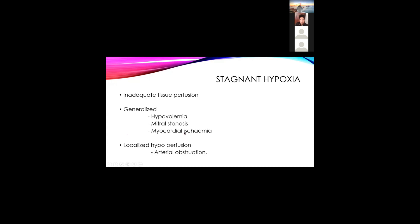The third type is stagnant hypoxia — there is inadequate tissue perfusion, that is shock. There can be a generalized problem such as hypovolemia, trauma, shock, or cardiogenic shock from myocardial infarction reducing cardiac output. There can also be a localized problem — arterial obstruction due to thromboembolic phenomena, tension pneumothorax compressing pulmonary vessels, or cardiac tamponade causing obstruction. Both generalized and localized perfusion problems can occur.